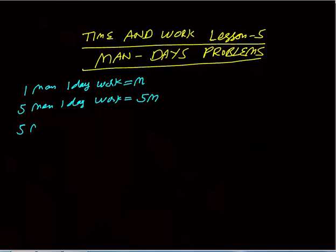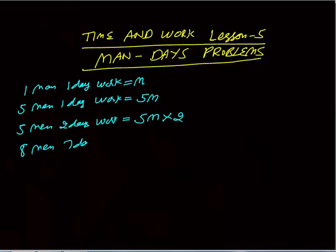Five men two days work would be five m into two, because in one day they are doing five m units of work, so in two days they will do ten m units. Similarly, eight men seven days work: first calculate eight men one day work, which is eight m. In seven days they will do eight m into seven units of work.